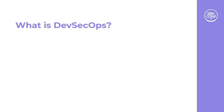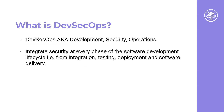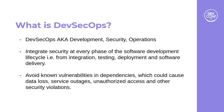DevSecOps stands for Development, Security, and Operations. It is a concept which says that security has to be checked at every phase of the software development lifecycle — when software is being developed, tested, deployed, and delivered to the end user. This helps avoid data loss, service outages, unauthorized access, or security violations. One way to ensure this is by having a reliable, vulnerability-free dependency stack.